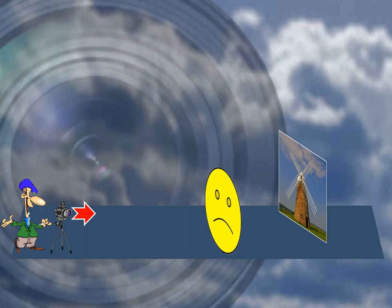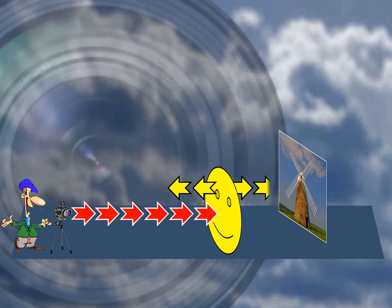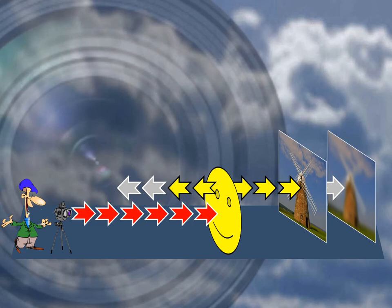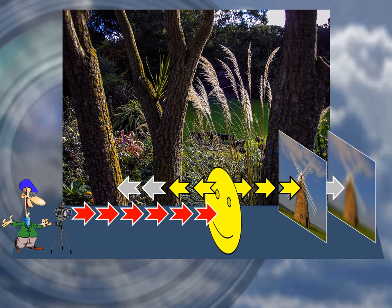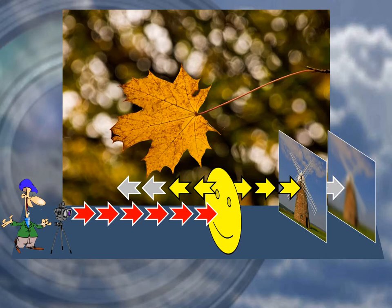When focusing on a subject, part of the image in front of and behind the subject will also be sharp. However, there is a point when a foreground or background, depending on how near or far away they are, will become out of focus. Depth of field refers to that part of the image around the subject that is sharp, but the amount from front to back is variable. It is not a fixed distance.